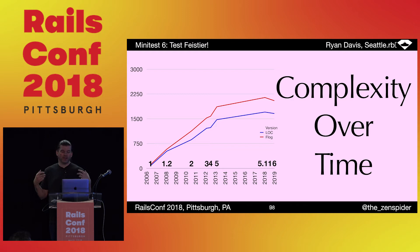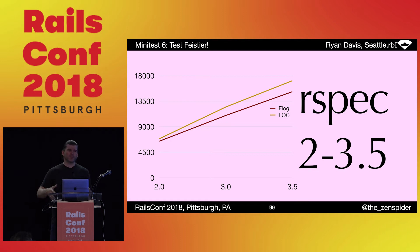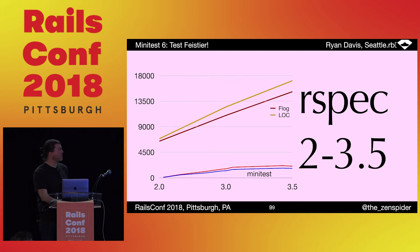I think this is more interesting data than a table of dates and descriptions. This is Minitest visualized over time — the blue line is the lines of code and the red line is a complexity metric from a tool I wrote called flog. By comparison, here's RSpec — unfortunately because of a repo split I can only gather numbers from version 2.0 to 3.5. Here's Minitest's numbers on the same scale.